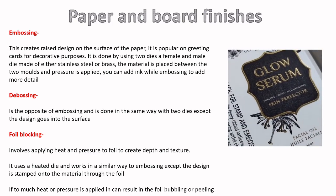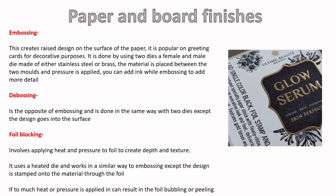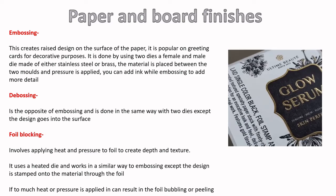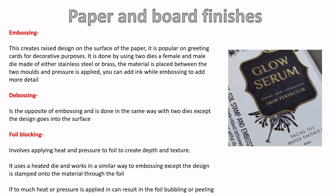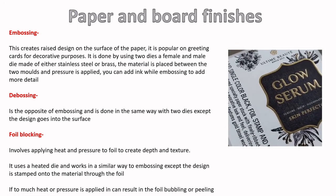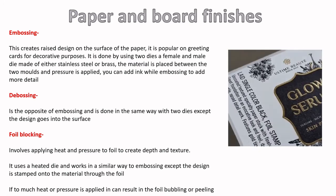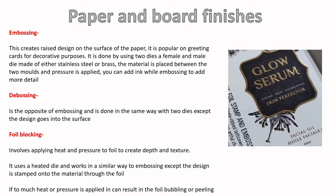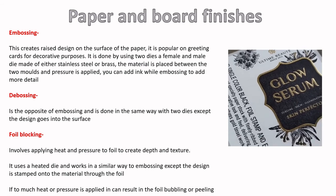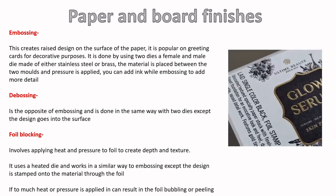Debossing is exactly the same process but the opposite way — embossing sticks out, debossing sticks in. Foil blocking is similar but instead of just pressing and adding ink, you simultaneously stamp foil onto the material. Heat allows the foil to transfer and stick onto the surface. You can combine foil blocking with embossing or debossing, but be careful: too much heat causes the foil to bubble and burn away, and too much pressure means it won't stick properly.